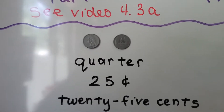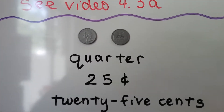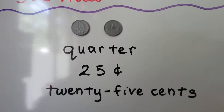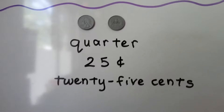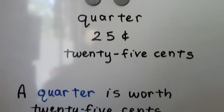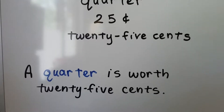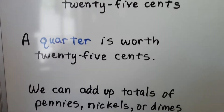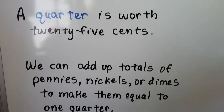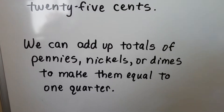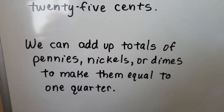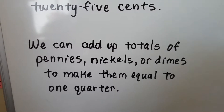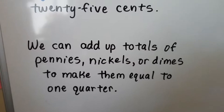So that's a quarter — that's the front and that's the back. It's worth 25 cents. A quarter is worth 25 cents. And we can add up totals of pennies, nickels, or dimes to make them equal to one quarter.